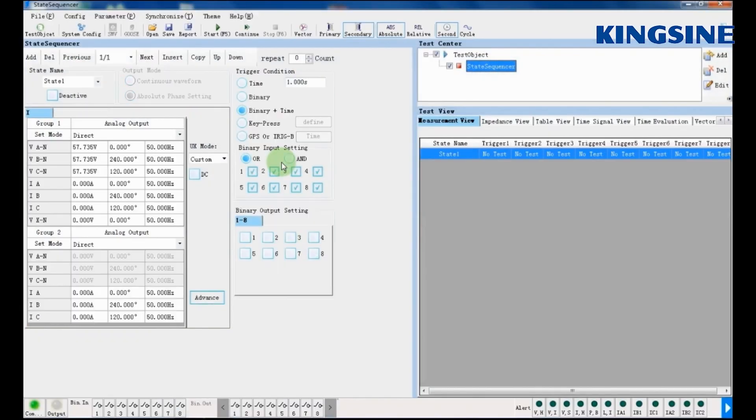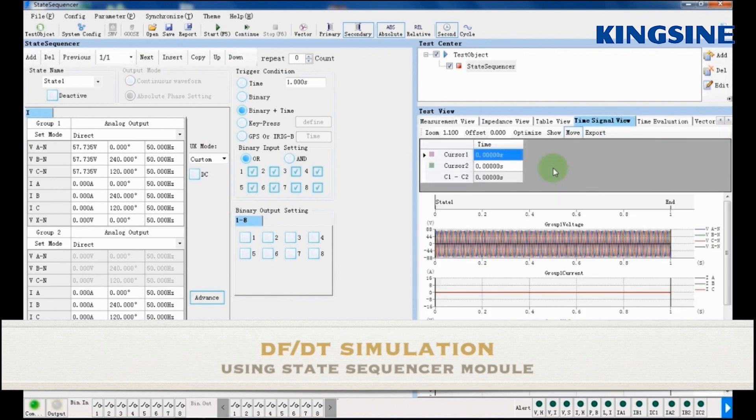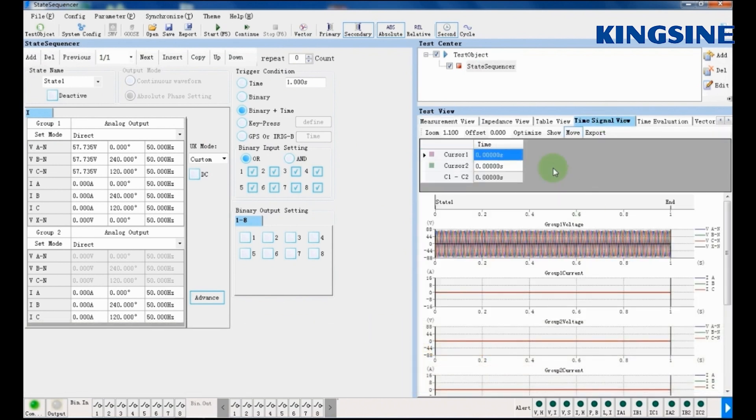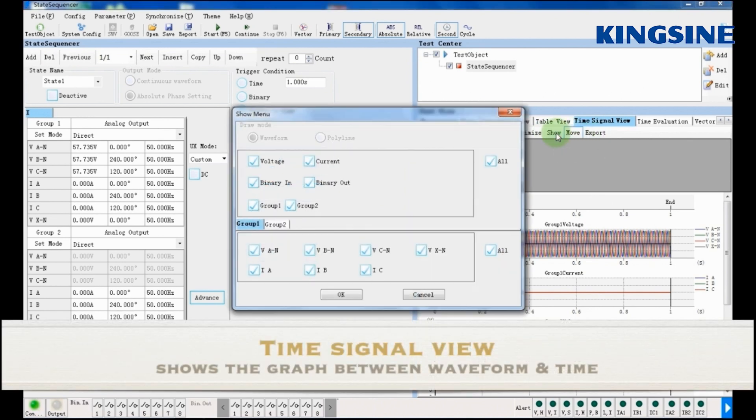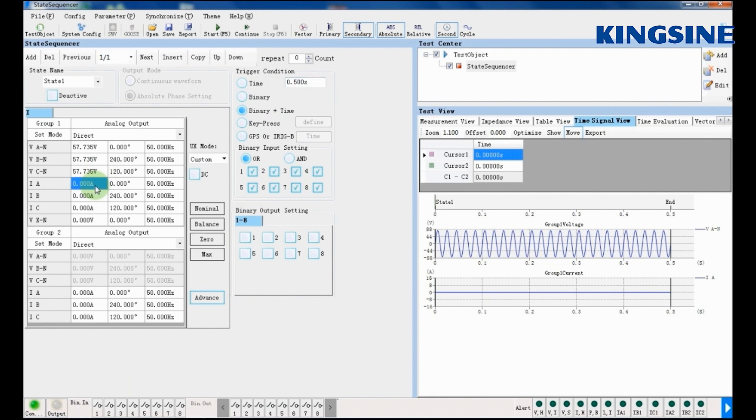Now we are simulating DF by DT signal in state sequencer mode of KRT software. First, we are entering time signal view and selecting the signals for which we want to observe the waveform. We have selected voltage and current signals. The time signal view will help us compare a normal signal waveform with DF by DT waveform.